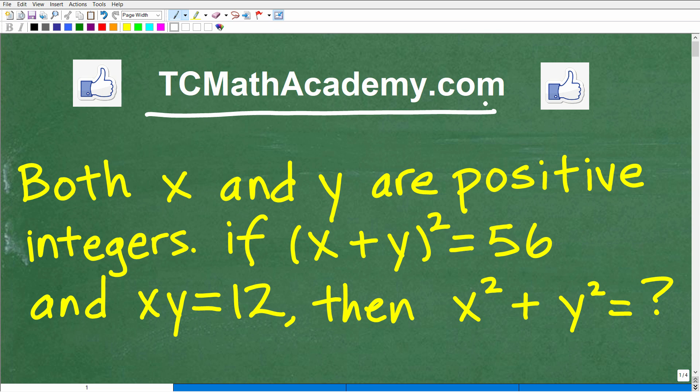Let me go ahead and read it to you. It says both x and y are positive integers. If (x+y)² = 56 and xy = 12, then what is x² + y² equal to?